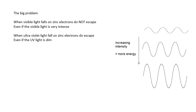Now, the big problem is that when visible light falls on zinc, electrons do not escape, even if the visible light is very intense. When ultraviolet light falls on zinc, electrons do escape, even if the ultraviolet light is dim. And this is a problem because we're thinking, well, the electrons are gaining energy, but surely if the light is more intense, that means it has more energy. So even if we shine a laser on zinc, like a red laser, electrons don't escape. Now, why not? Surely laser light has got lots and lots of energy.